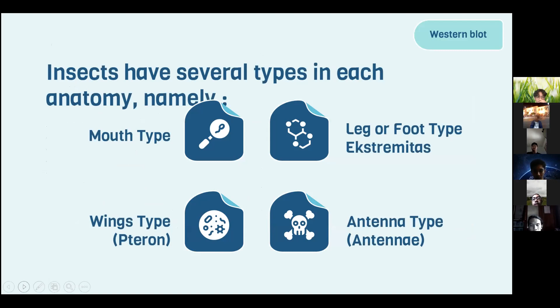Insects have several types in each anatomical feature, namely mouth types, leg or foot types, wing types (pteron), and antenna types.